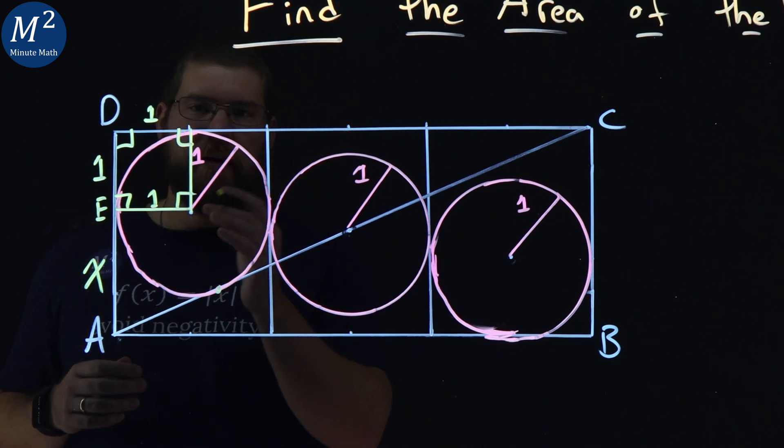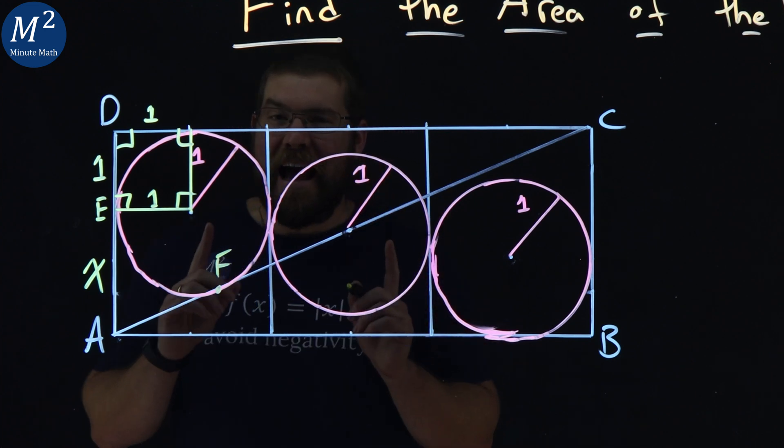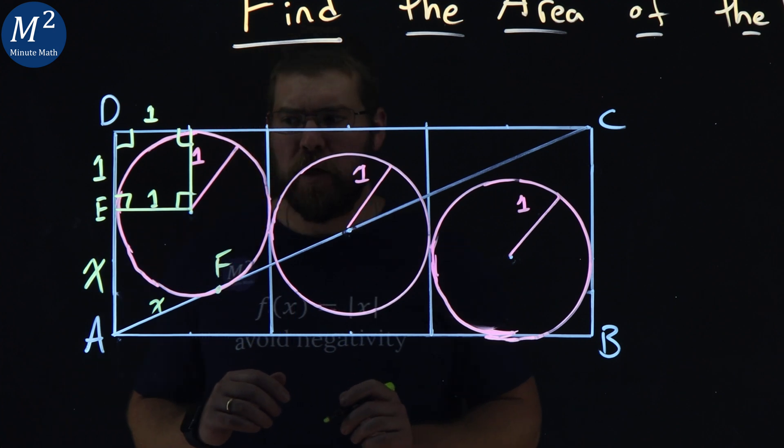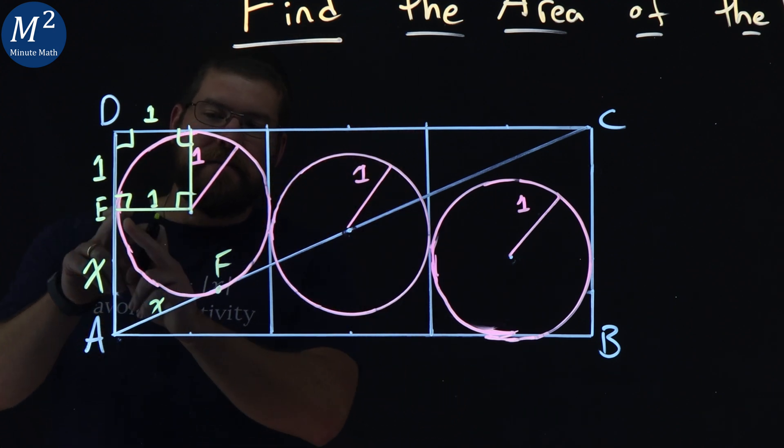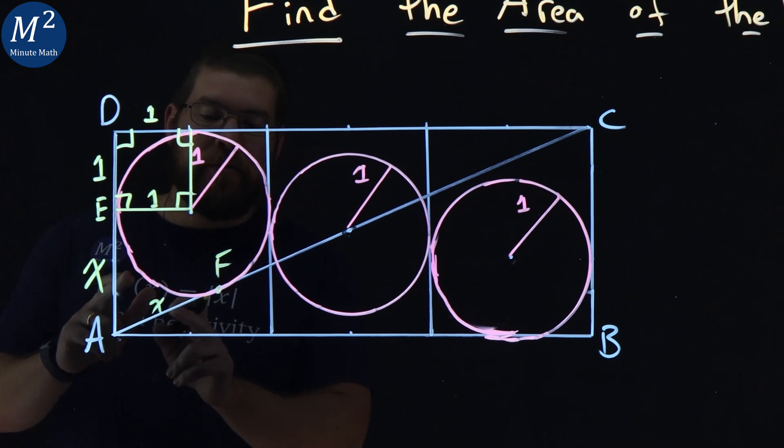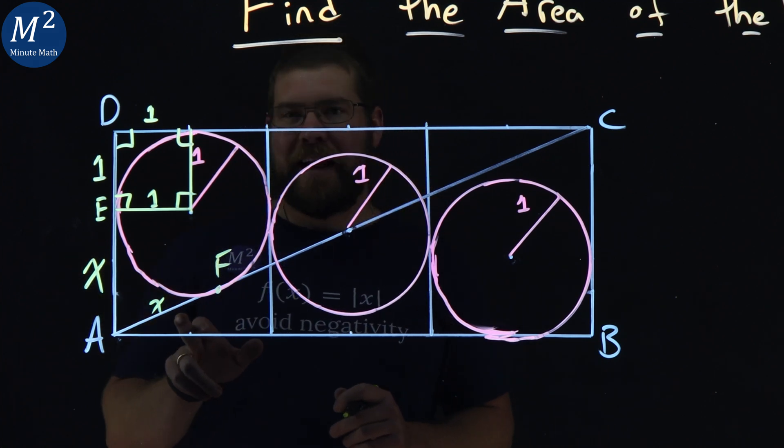Let's call that point F. That point is actually also X as well. It's the two-tangent theorem. We have a point here that has two lines that are both tangents to the same circle, meaning that these two lines are equal. So we both have a value of X here.